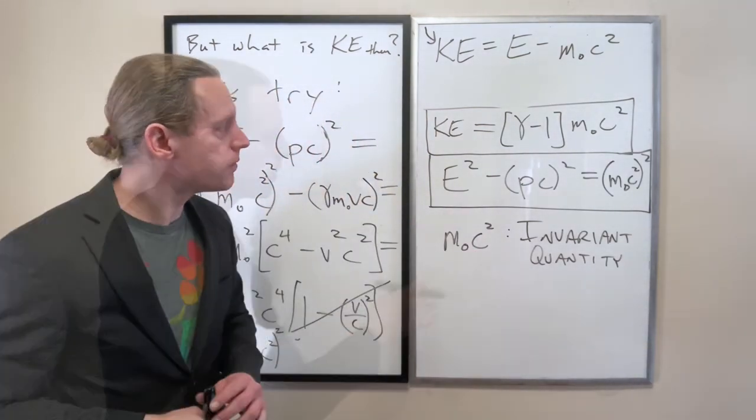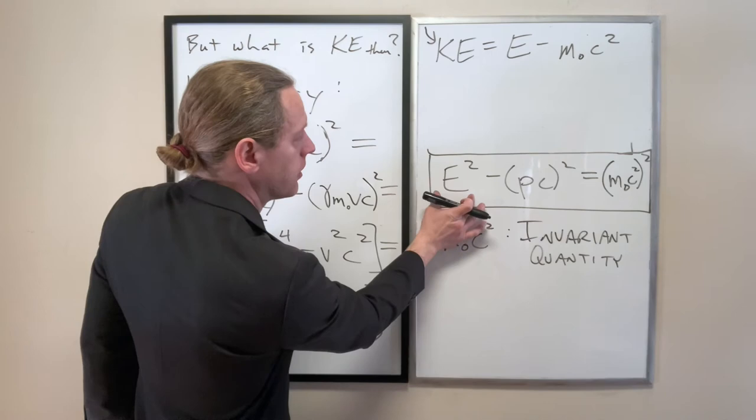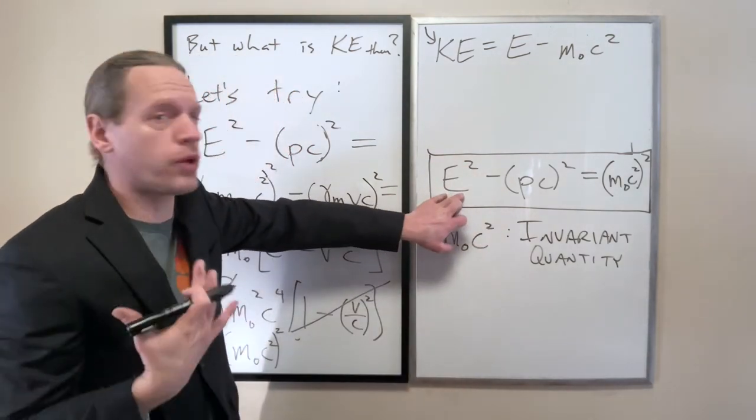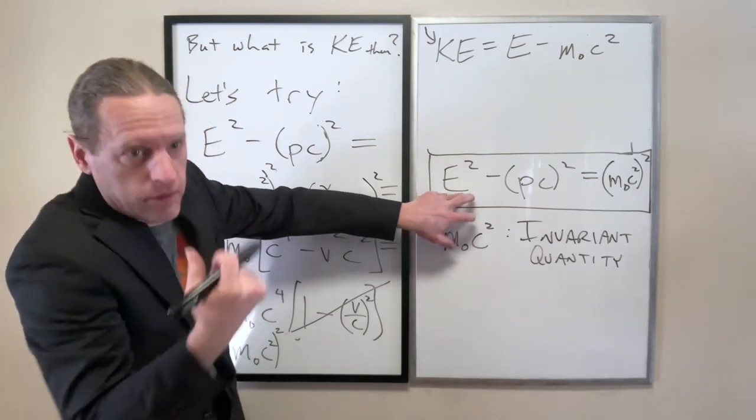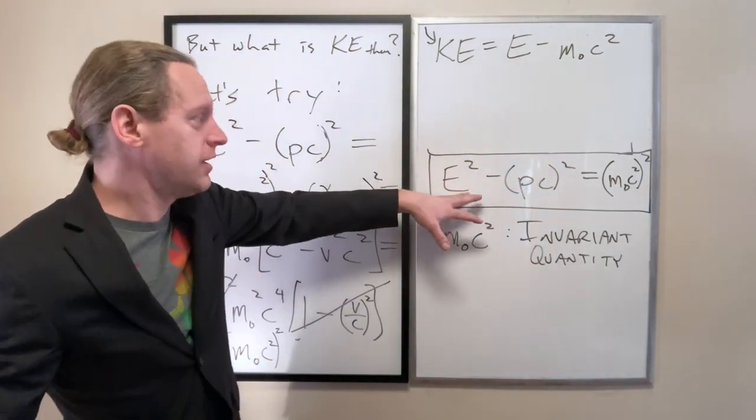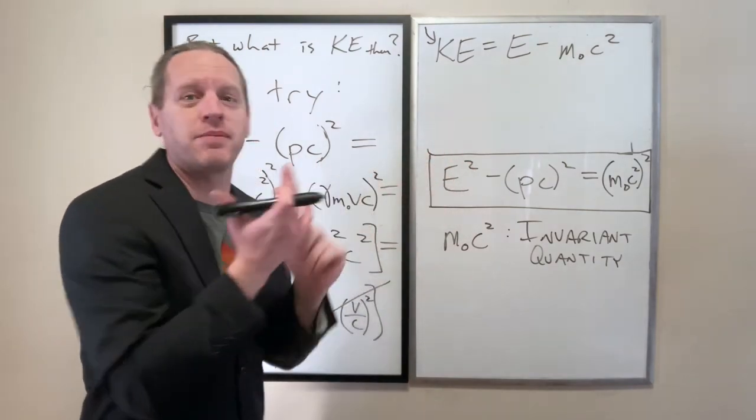M naught C squared squared is our relativistic invariant on the right-hand side. Or we just literally leave it like that. So this is now an invariant quantity. And let's put some words into it here. So if we consider this term here, this is the overall, the total energy of the particle squared.